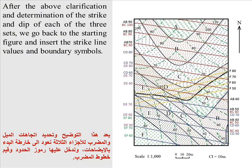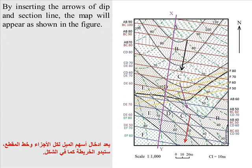After determining the strike and dip of each of the three sets, we go back to the starting figure and insert the strike line values and boundary symbols. By inserting the arrows of dip and section line, the map will appear as shown in the figure.